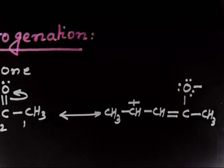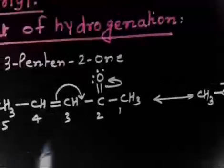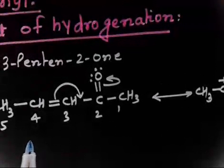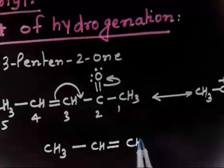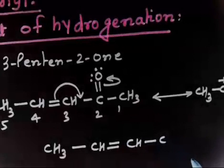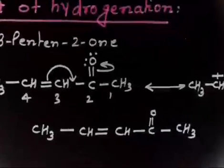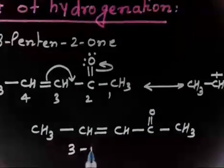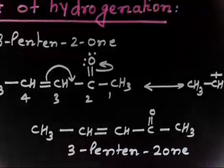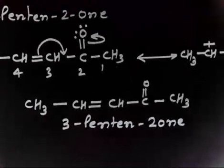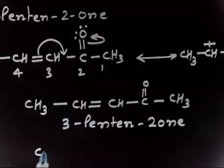The second part of the question asks which compound would have a smaller ΔH° for heat of hydrogenation. We have two molecules: the first is 3-pentine-2-one — CH3, C double bond CH, CO, CH3.